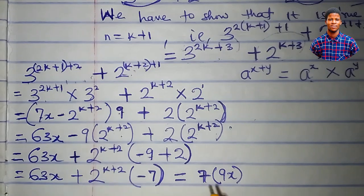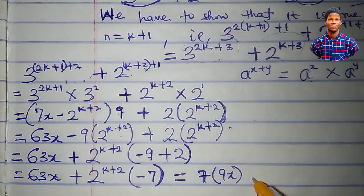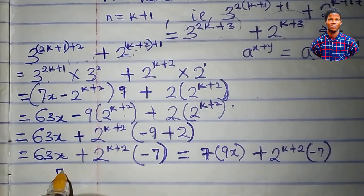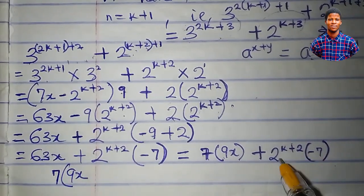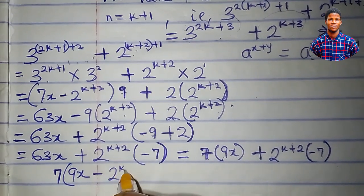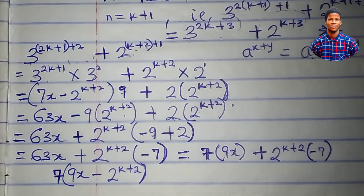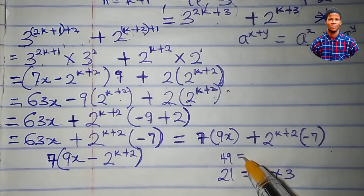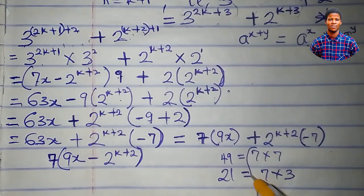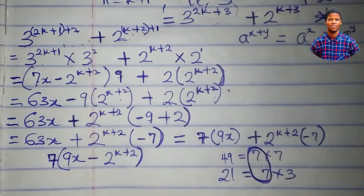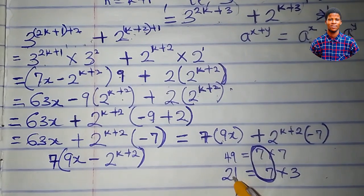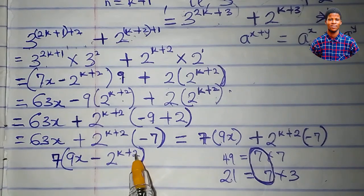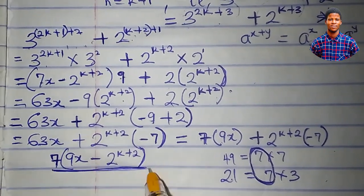We write 63x as 7 times 9x. So the whole expression becomes 7 times 9x, minus 7 times 2^(k+2). We can see that 7 is common to both terms. Factoring out 7 gives 7 times (9x minus 2^(k+2)). Since the expression is a multiple of 7, it is divisible by 7. This completes the proof.